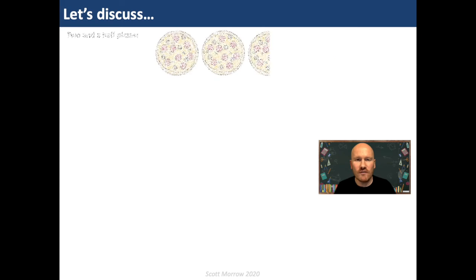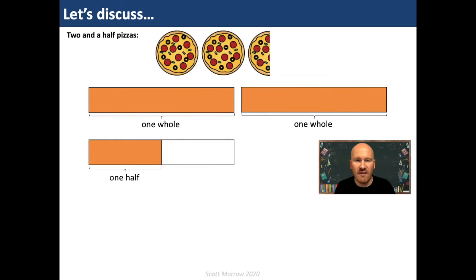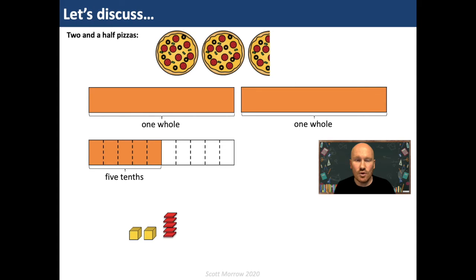Let's have a look at two and a half pizzas. I can draw bars to represent that — two wholes and one half. But when converting this into decimals and using those resources, it's a little bit tricky. I know I'm restricted to working with tenths and hundredths, but I've got a half. I can use my understanding of equivalence to change that half into five tenths. Now I can put out two ones and five tenths to represent that number. Two and a half converts to two and five tenths, written as 2.5.